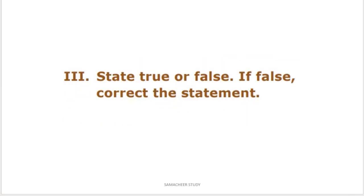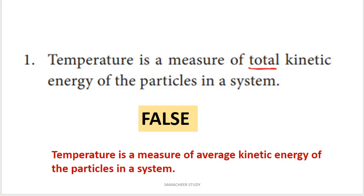Now for true or false questions. First statement: temperature is a measure of total kinetic energy of the particles in a system. This is false. Temperature is the measure of the average kinetic energy of the particles, not total. You need to change 'total' to 'average' to correct this statement.